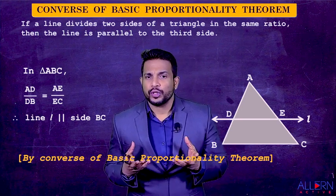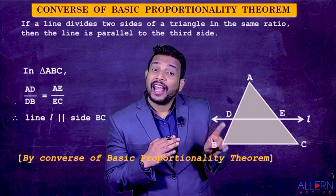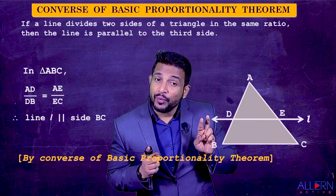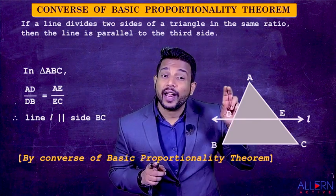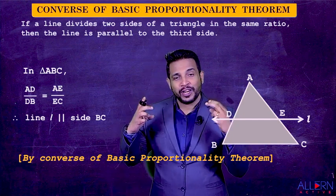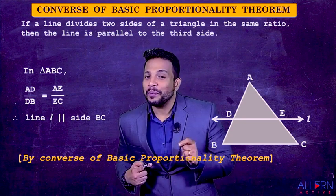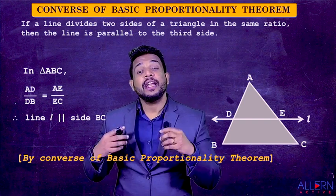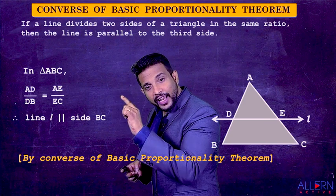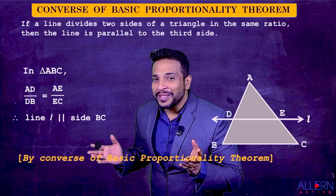When do we use the Converse of Basic Proportionality Theorem? In a triangle, when we want to prove a line parallel to a side — remember this important concept. This will happen provided those ratios are equal. Once we show those ratios are equal, we can say the line is parallel to the side and write the reason as Converse of Basic Proportionality Theorem. The writing presentation is the same: first write the name of the triangle, then show the ratios equal, then state the line is parallel to the side.